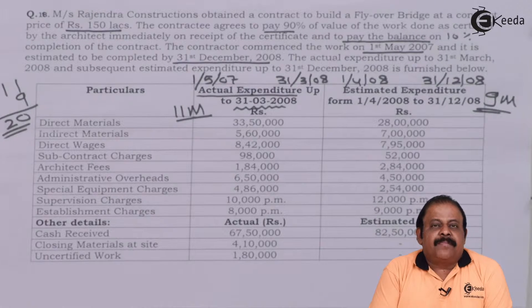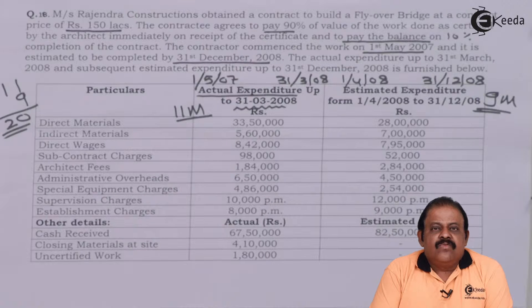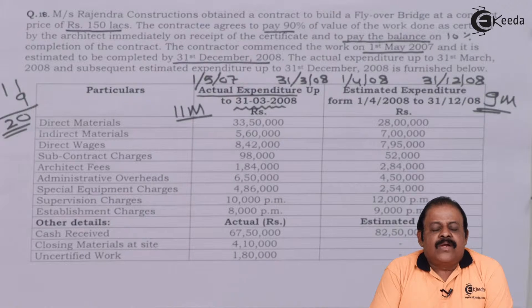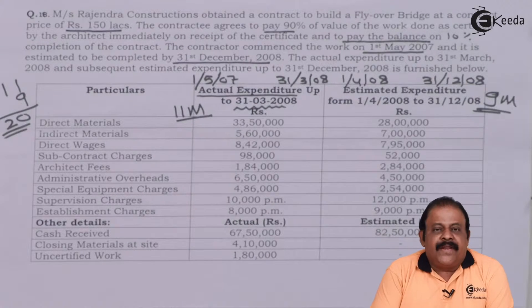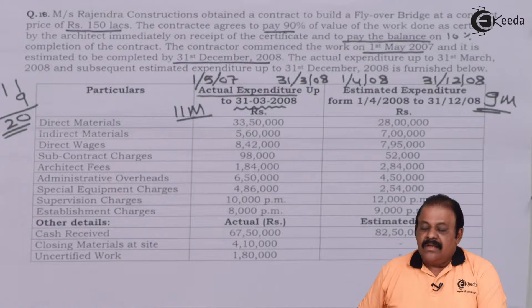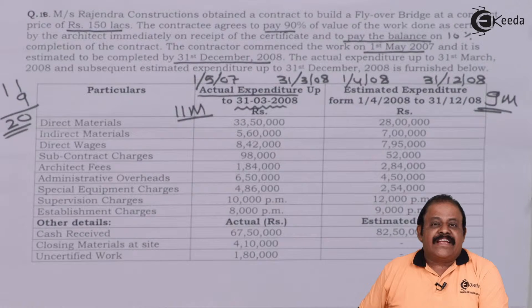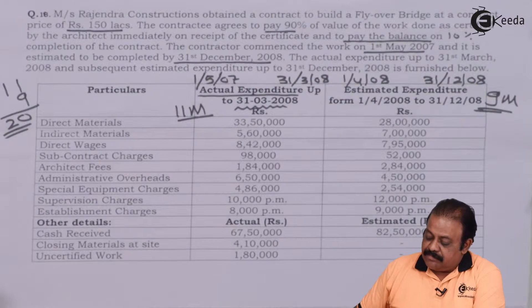We are required to prepare one contract account for the period of 11 months and a total contract account for the full period of 20 months. Let us go to the expenditures.